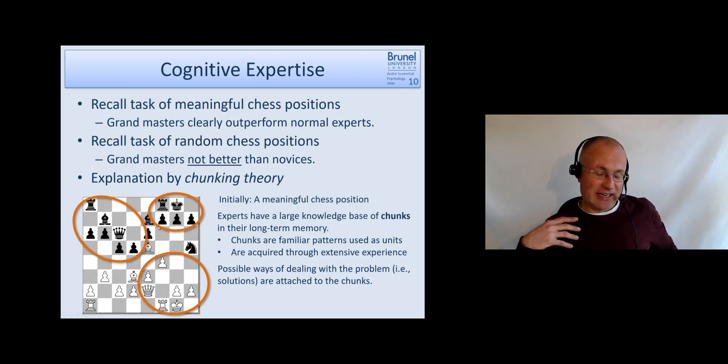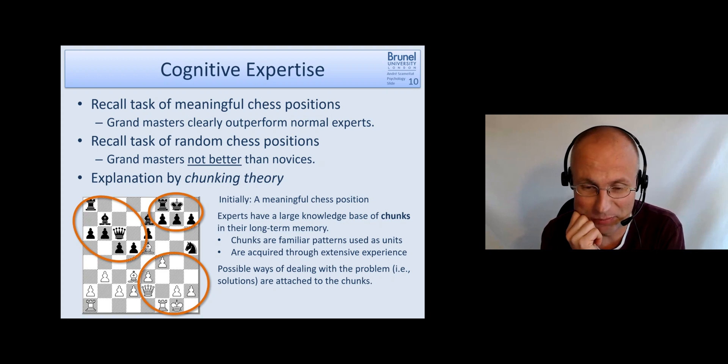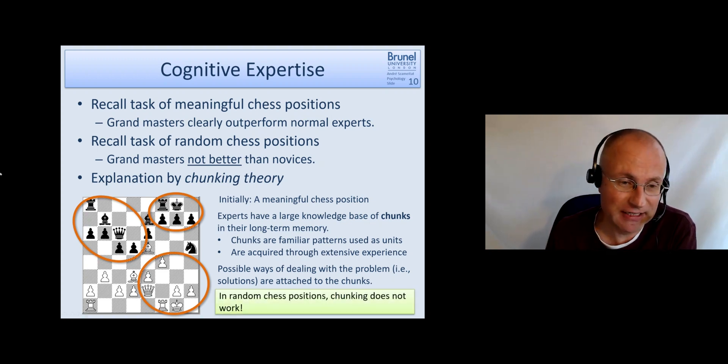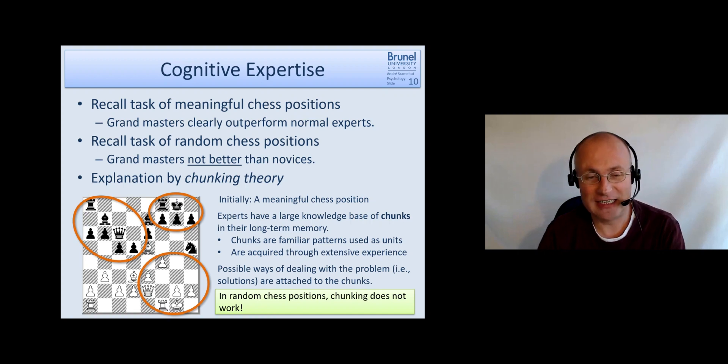When super experts see a certain combination, they immediately see it's a low memory load and they already have one, two, three different ways popping up. Okay, how can I break that arrangement up? How can I get to the king? This gives them the advantage in play, a mere knowledge advantage. However, if this is completely randomly arranged, then naturally the chunking doesn't work and they have to use exactly the same approach as a novice or a normal expert.